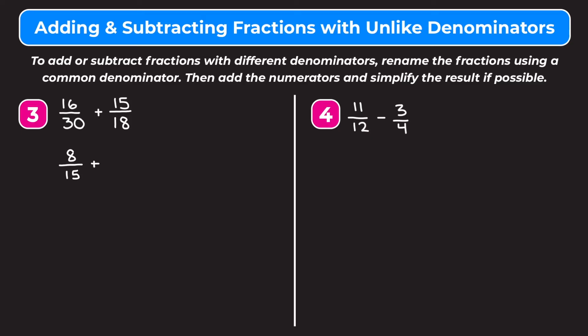We can also simplify 15 over 18 by dividing the top and bottom by 3. 15 divided by 3 gives us 5, and 18 divided by 3 gives us 6, so 15 eighteenths becomes 5 sixths. Now I want to find the least common multiple of 15 and 6. Writing out multiples of 6: 6, 12, 18, 24, 30, 36. And multiples of 15: 15, 30. We see that 30 is in both lists, so the least common multiple of 6 and 15 is 30.